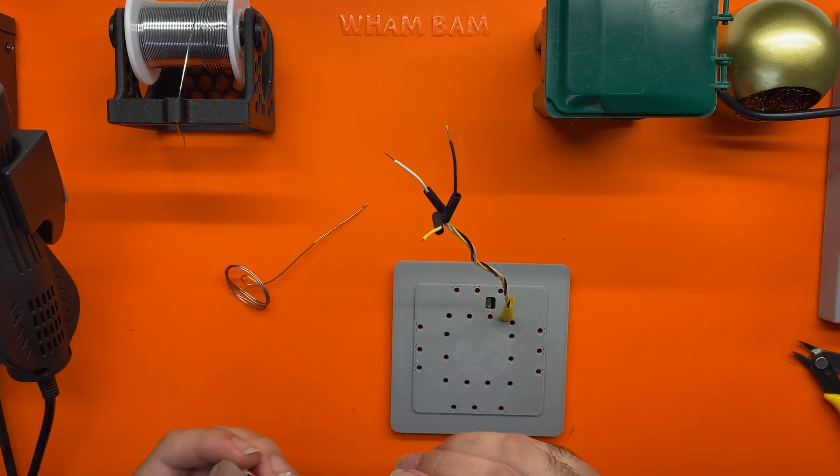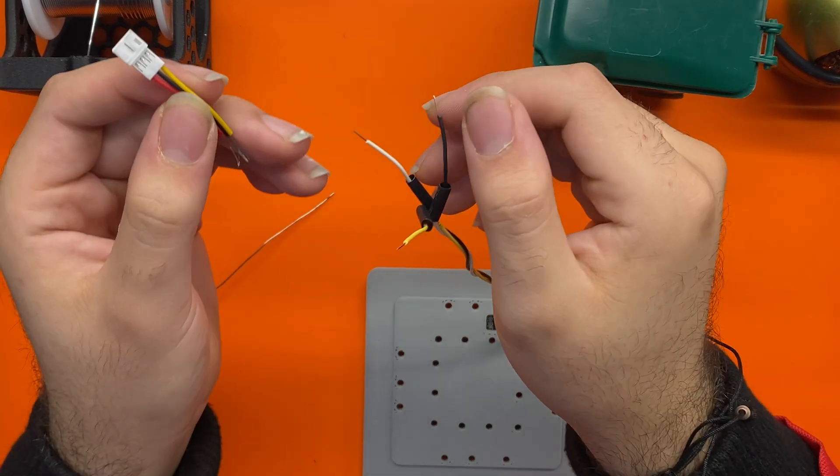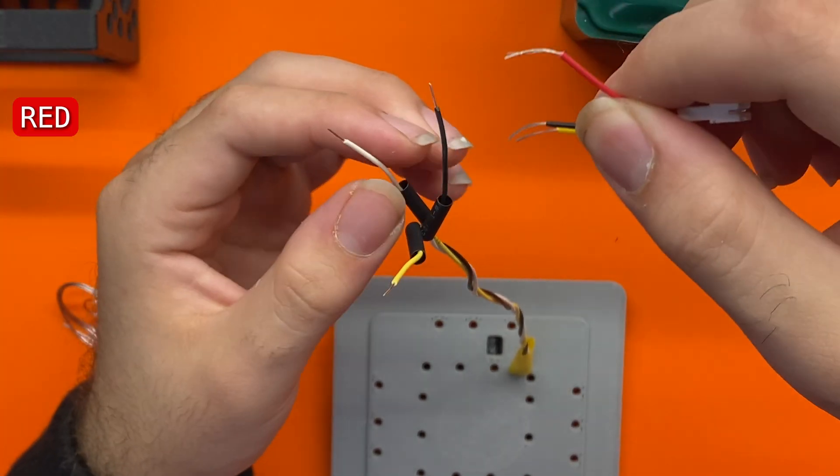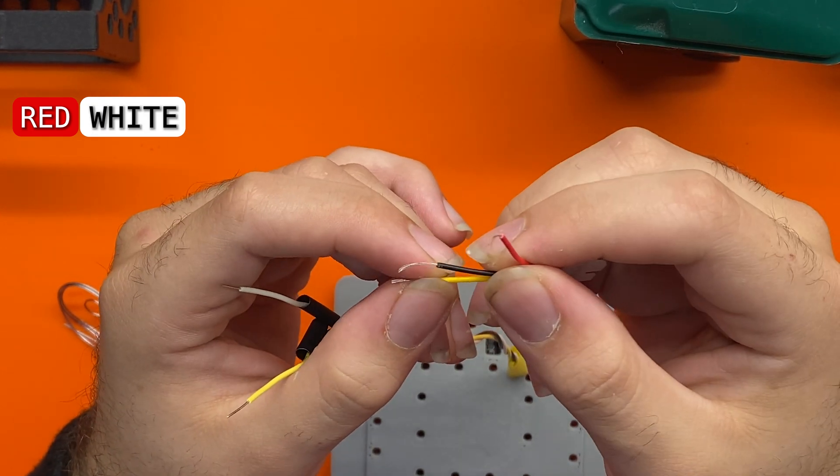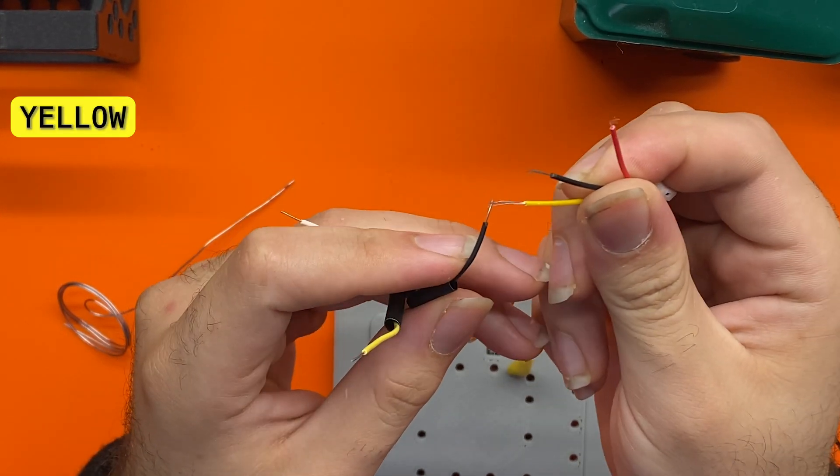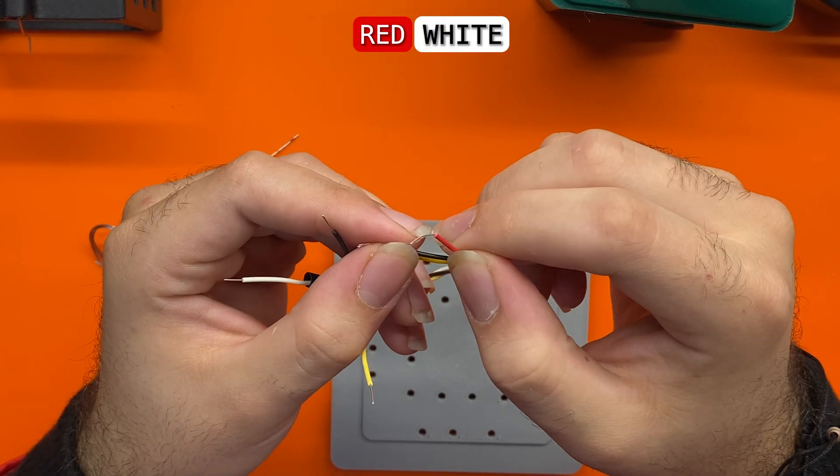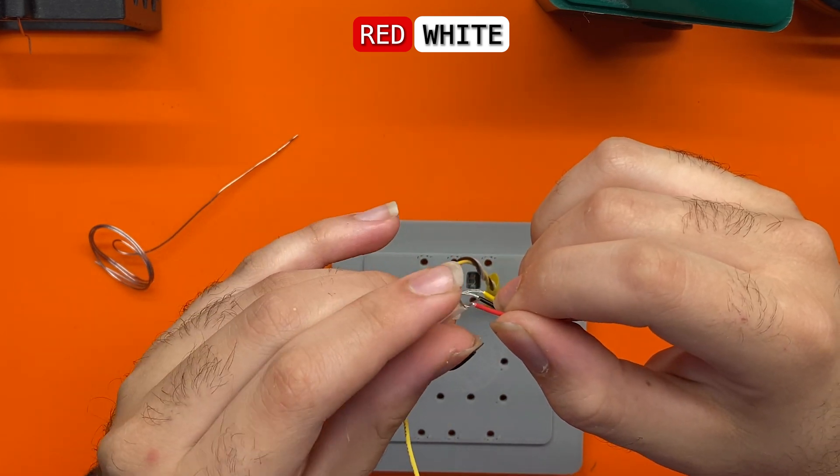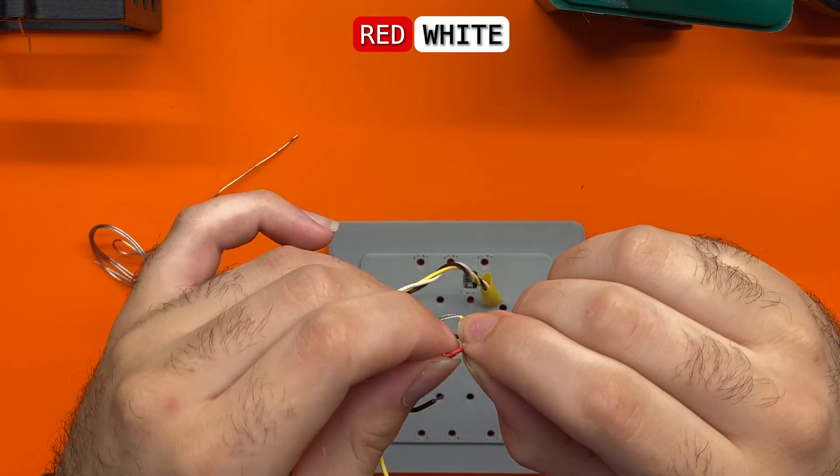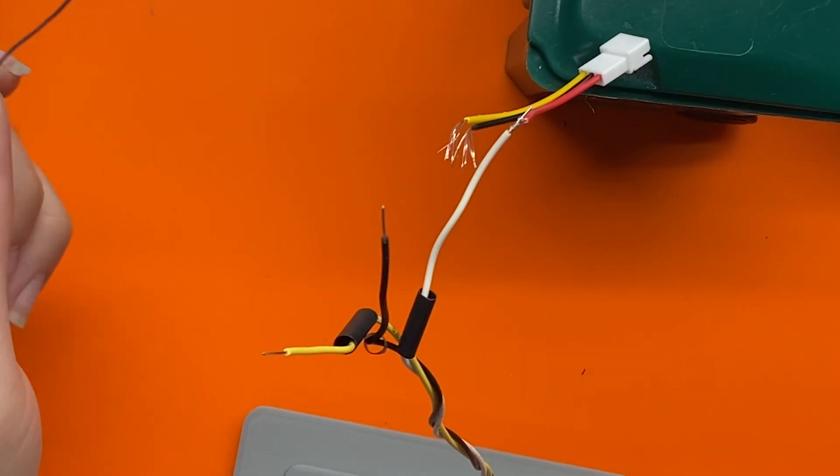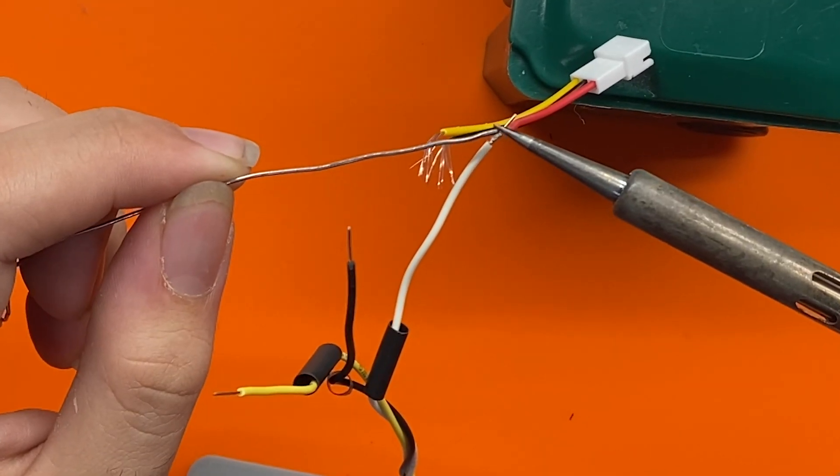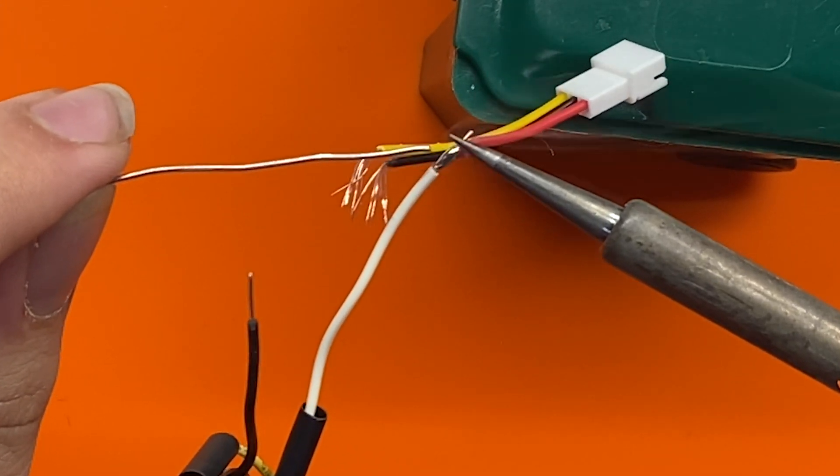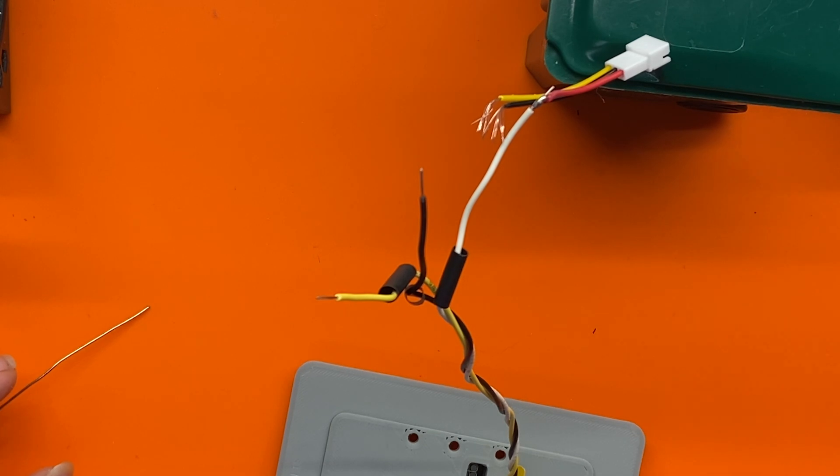Then we want to grab our socket piece, and here we want to attach red to white, black to yellow, and yellow to black. You can use our helping hands if you'd like to make this a little bit easier.